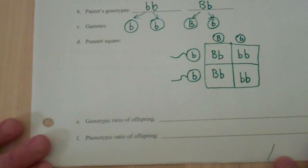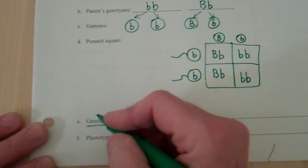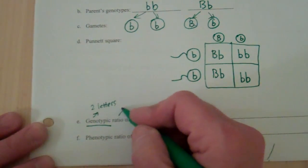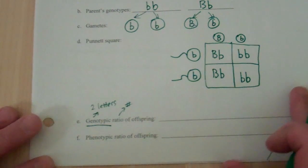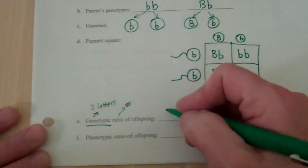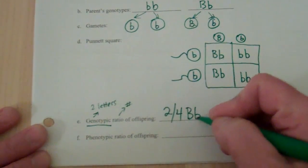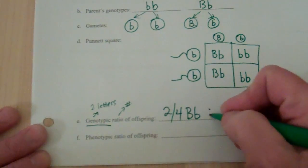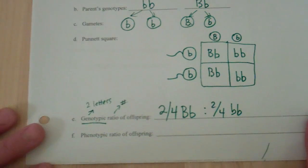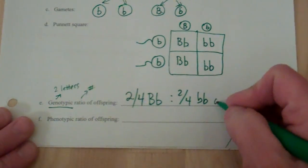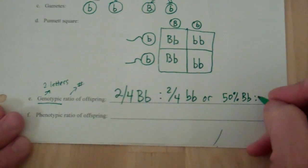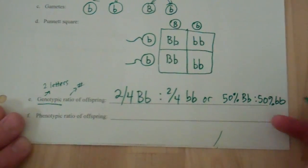So now our genotypic ratio. Genotypic means that I want those two letters. Ratio means that I want some numbers. So let's look. What genotypes do we have? We've got these two genotypes. And we've got two of them, two out of four. So we can say two out of four are big B, little b. That's a genotype. To two out of four, little b, little b. That's a genotypic ratio. If you like percentages, you could write it as 50% big B, little b, to 50% little b, little b.